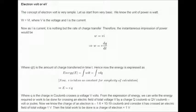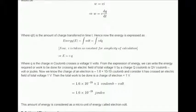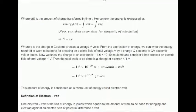Where Q is the charge in Coulomb crosses a voltage V volts. From the expression of energy, we can write the energy required or work to be done for crossing an electric field of total voltage V by a charge Q Coulomb as QV Coulomb-Volt or Joules. Now we know the charge of an electron is 1.6 times 10 to the -19 Coulomb and consider it has crossed an electric field of total voltage 1 V. Then the total work to be done is charge of electron times 1 V.